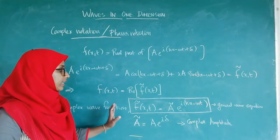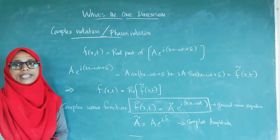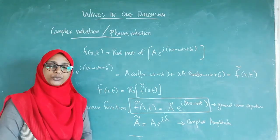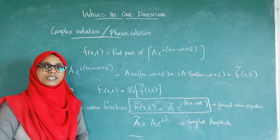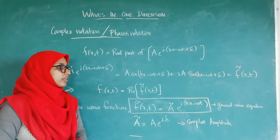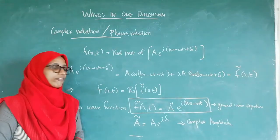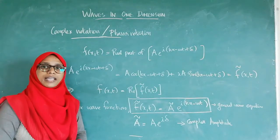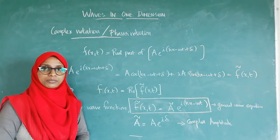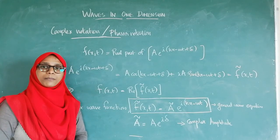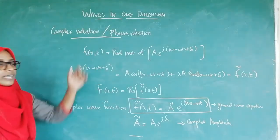This is the phasor notation, and it is used in future derivations because it is much easier to work with the exponential term than with sine or cosine terms directly. That is the primary importance of the phasor notation.